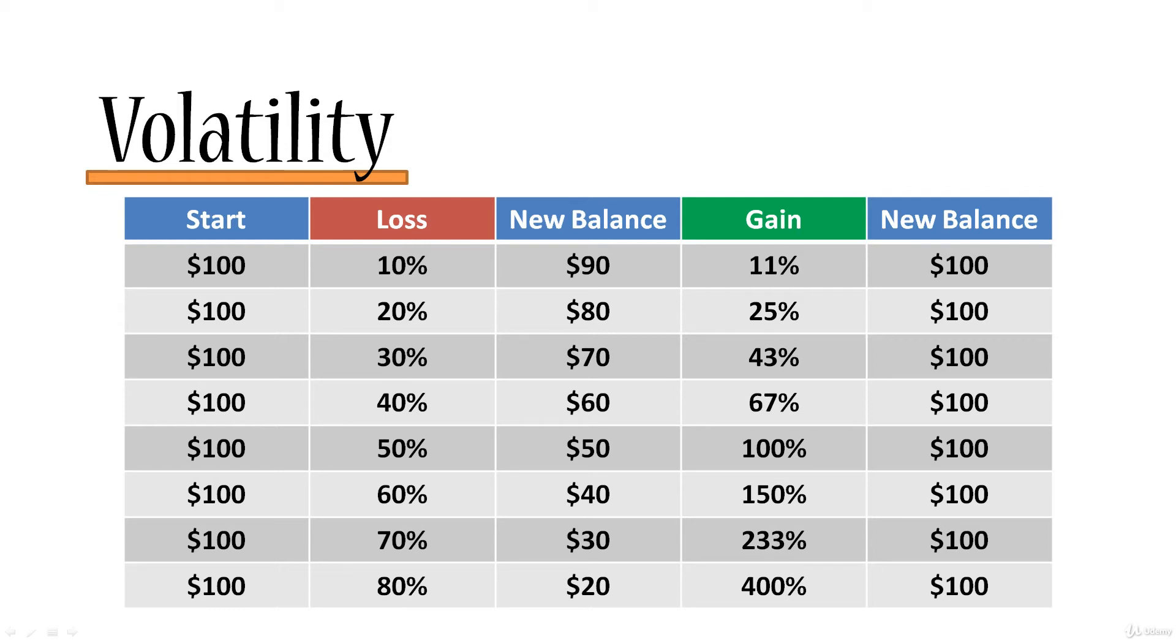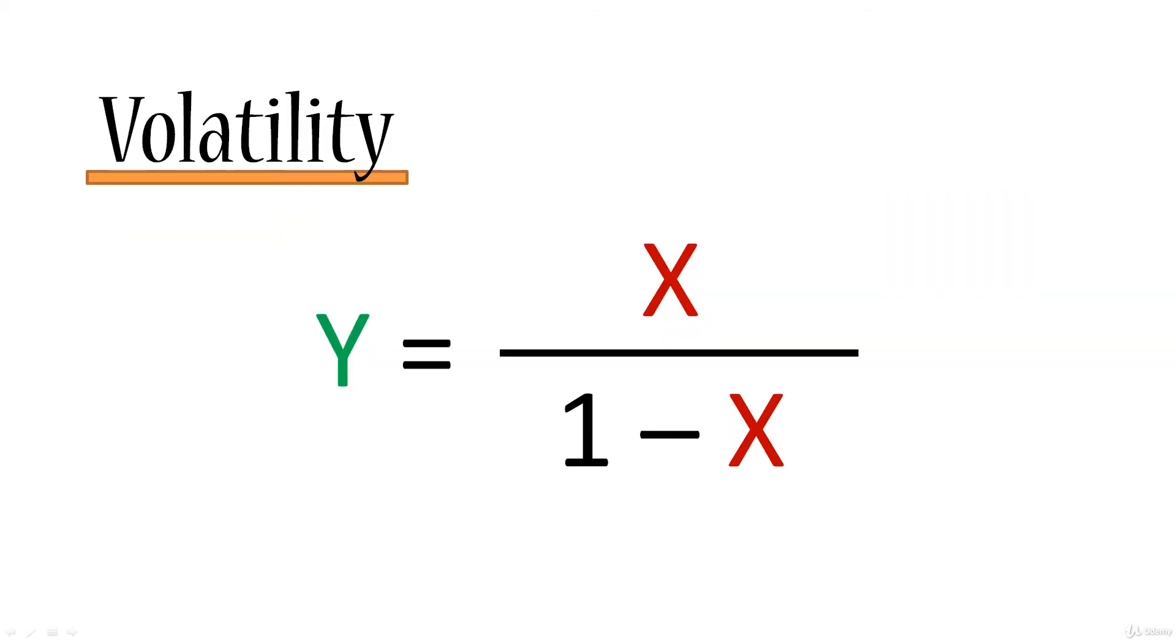There is actually a formula that governs the relationship between them. And the formula looks like this. Where the green is the gain and the red is the loss. Y is your gain. X is your loss. If you plug into this formula those percentages that we saw, then you will see that this formula is the one that describes that relationship. So once we have the formula, we won't go into too much detail about how it is derived and stuff like that. I just put it on the slide just in case you're interested in math and you want to check these things for yourself.